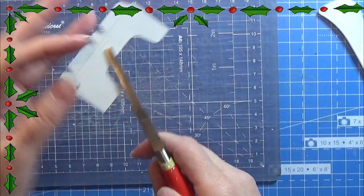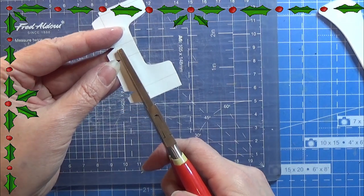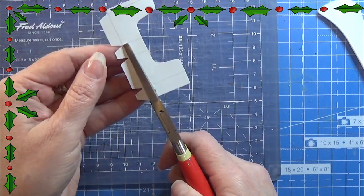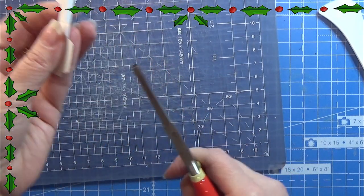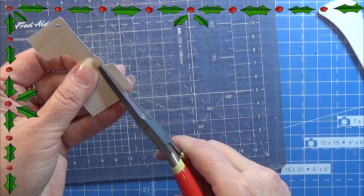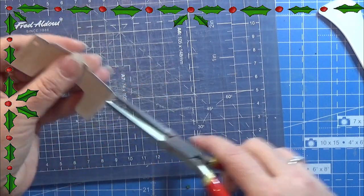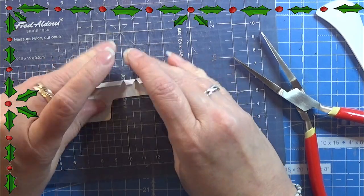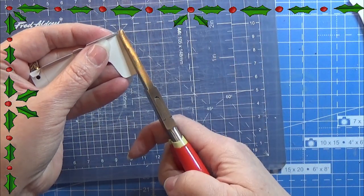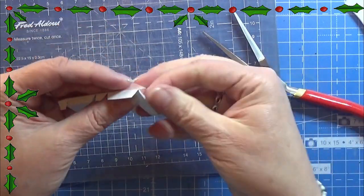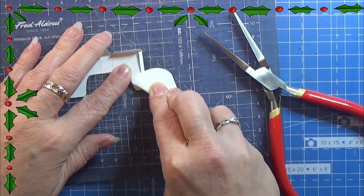If you don't have that, you can use an Exacto knife. I'm using this flat nose plier to bend all the bends. I want the gray line, the cut line, and the bent line on the inside of this little paper holder, so I'm just going to bend it so it's on the inside.